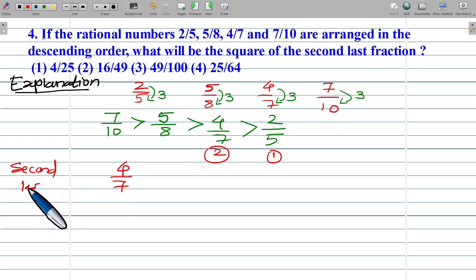The square of the second last fraction: 4 square is 16 and 7 square is 49, so the answer is 16 upon 49. Option number 2.